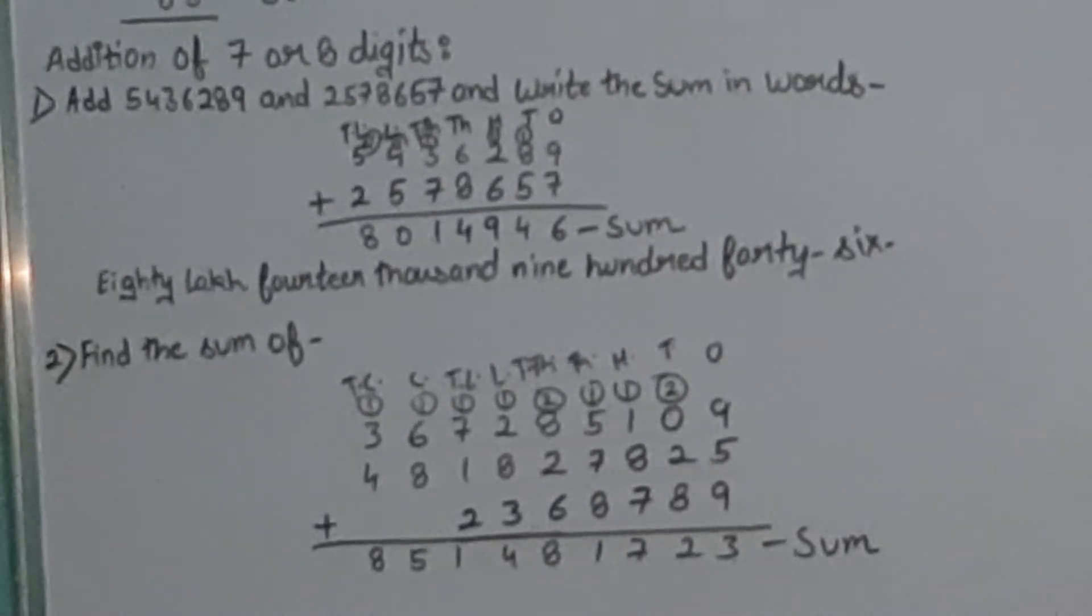Next sum - we have to add three numbers. First number is 367285109, second number is 481827825, and third number is 23687889. Write the first number in the first line, second number in the second line, and third number in the third line. Make divisions: ones, tens, hundreds, thousands, ten thousands, lakhs, ten lakhs, crores, and ten crores - numbers are big, till ten crores.